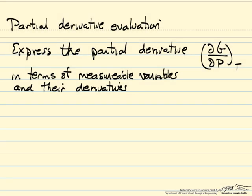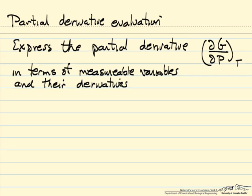This problem, we want to evaluate the partial derivative of Gibbs free energy with respect to pressure, and we want to do this partial derivative at constant temperature. We want to end up with something that's in terms of variables we can measure.